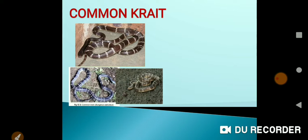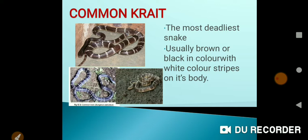Next is the Common Krait. It is grey, black, or brown in color and also has white stripes on its body, but it does not have the mark which the cobra has on its fang. This is the most deadly snake - after its bite a person can die within seconds. You can easily recognize it by the white stripes on its body.